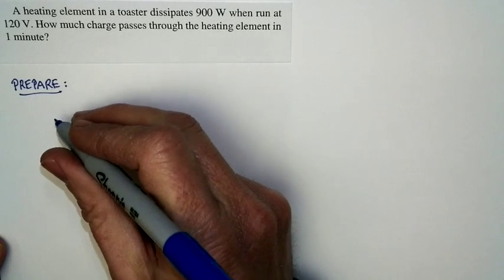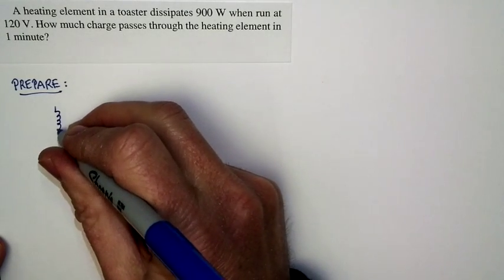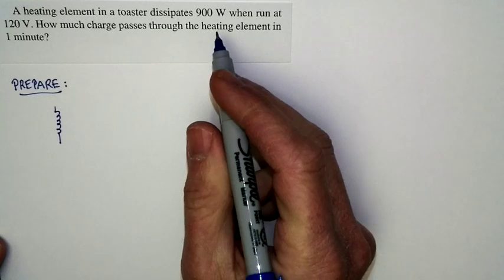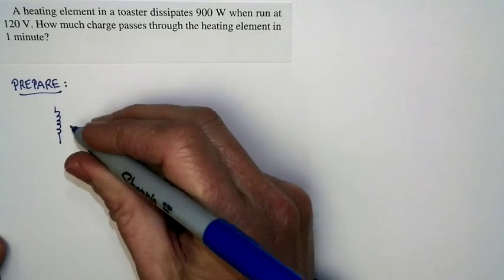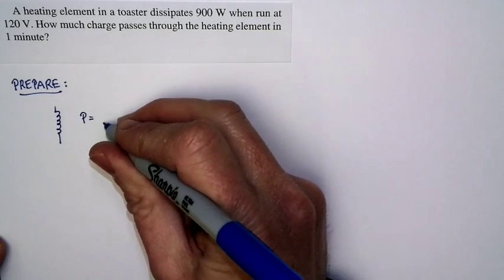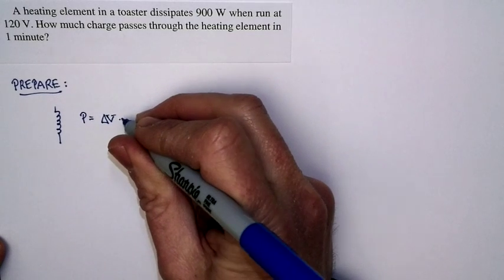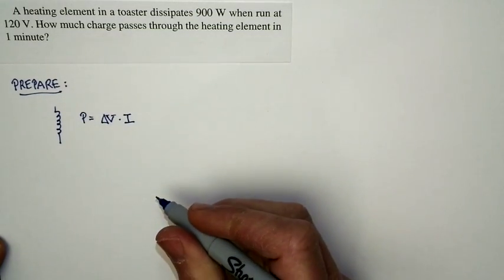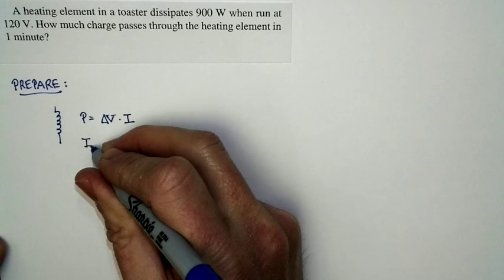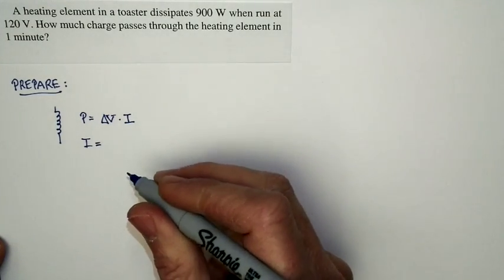Let's take a look at our preparation here. We've got the filament inside the toaster. It's dissipating 900 watts when it's running at 120 volts. Well, power is equal to delta V times I. As a warm-up, I'm just going to calculate how much current is in the toaster.